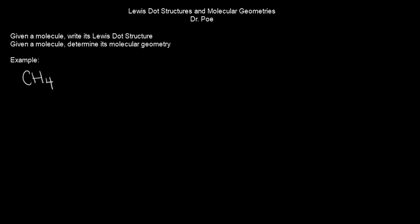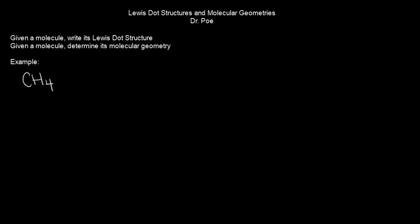Now we're going to work on Lewis dot structures and molecular geometries. Given a molecule, you should be able to write its Lewis dot structure and also determine its molecular geometry. These two really go hand in hand because of the valence shell electron pair repulsion theory, or VSEPR theory.